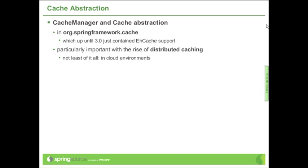Moving on to the cache abstraction — this is something we meant to do for a long time. It's one of the most requested features, for about four years. We basically had it in the plan for at least five years; we even had an org.springframework.cache package. Now in 2010-2011, with the rise of distributed caching and cloud environments, where a dedicated server with local cache setup is becoming less common, caching needs to be revisited in many ways.